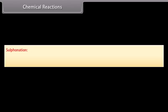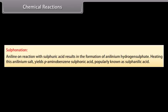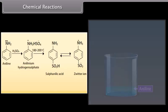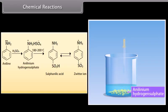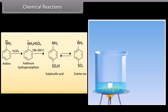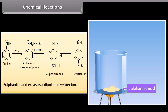Sulfonation: Aniline on reaction with sulfuric acid forms anilinium hydrogen sulfate. Heating this anilinium salt at 180–200°C yields para-aminobenzenesulfonic acid, properly known as sulfanilic acid. Sulfanilic acid exists as a dipolar or zwitterion.